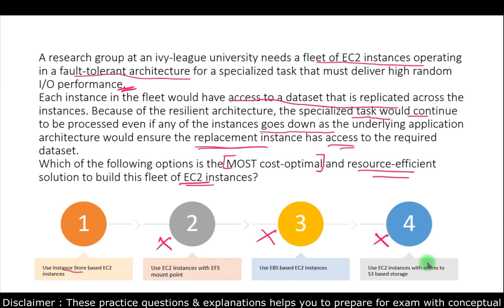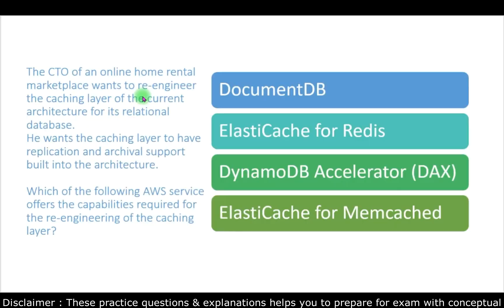So the correct answer is instance store based EC2 instances, which offer high performance and are suitable for temporary storage where data changes frequently, as is the case here with replicated data. If you disagree, please mention in the comments what you think is best — it can help others as well.